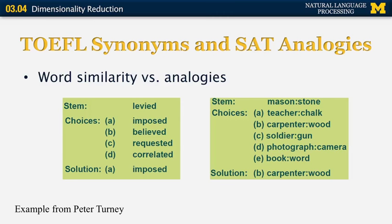Let's look at some examples from the natural language processing literature. The example on the left gives you a multiple choice question from the TOEFL test. You're given a word — specifically 'levied' — and you're asked which word is most similar to it. The choices are A) imposed, B) believed, C) requested, D) correlated. The answer is that the most similar word to 'levied' is 'imposed.' This is the kind of semantic relationship that we want to discover in text, and this is where latent semantic analysis, the technique we're introducing today, is going to help us.